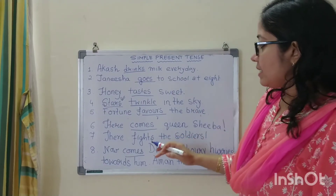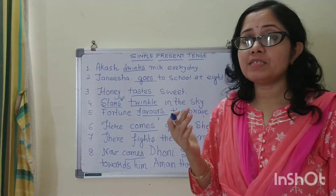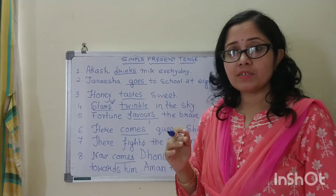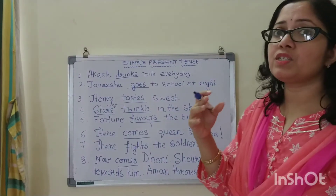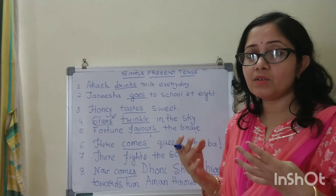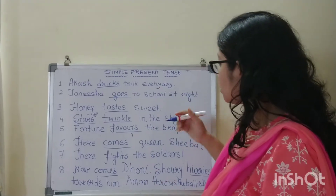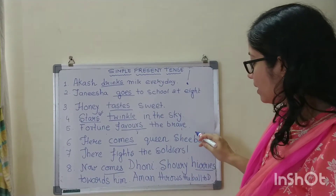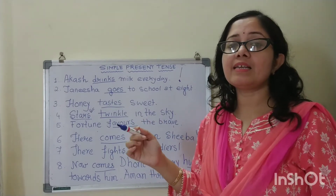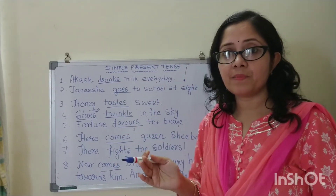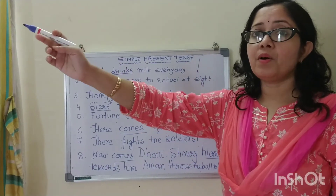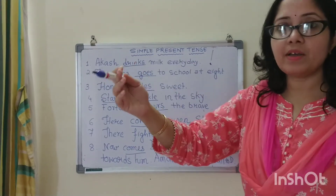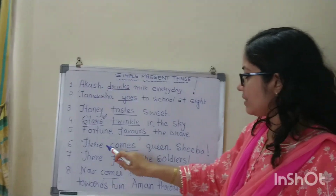Now next: whenever I am using exclamatory sentences starting with here and there. You know what exclamatory sentences are? Sentences which are showing wonder — you are expressing wonder in your tone and ending with an exclamatory mark. So here: Here comes the king Alexander — comes. There go the boys — goes. So that way.